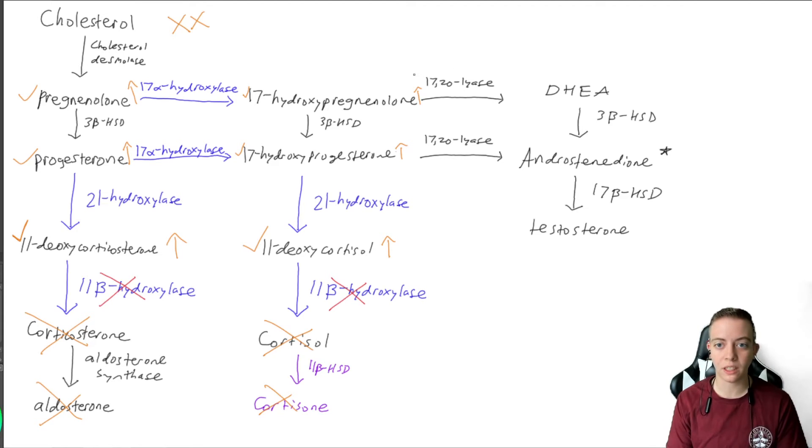Once again, we can follow the 17-20-lyase pathway. We're going to favor this direction, and we're going to favor androgen production. Can we make DHEA? Yeah, we can. Can we make androstenedione? Yeah. Can we make testosterone? Yep. So since this is the only way that we can go, we're going to have increased DHEA, increased androstenedione, increased testosterone. So we're going to have a high amount of androgens in this fetus.